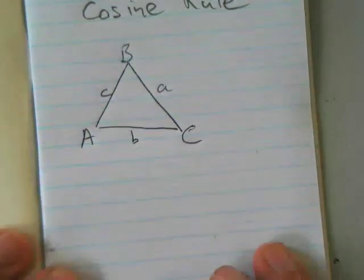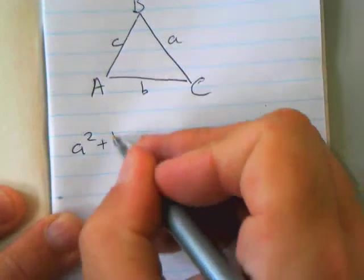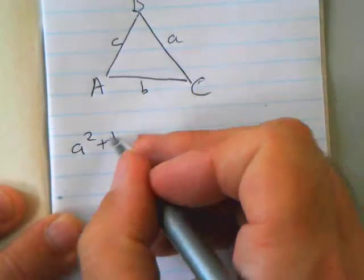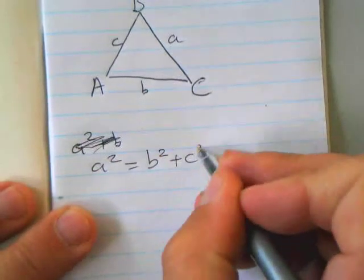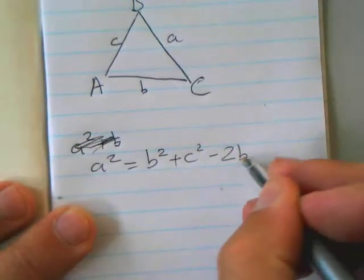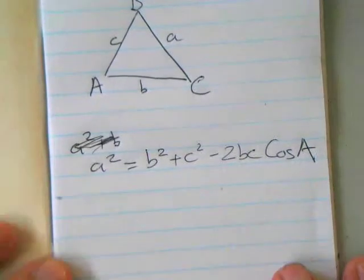And you're all OK with the fact that cosine rule is this: a squared equals b squared plus c squared minus 2bc cosine A. And I did show you some variations around that.